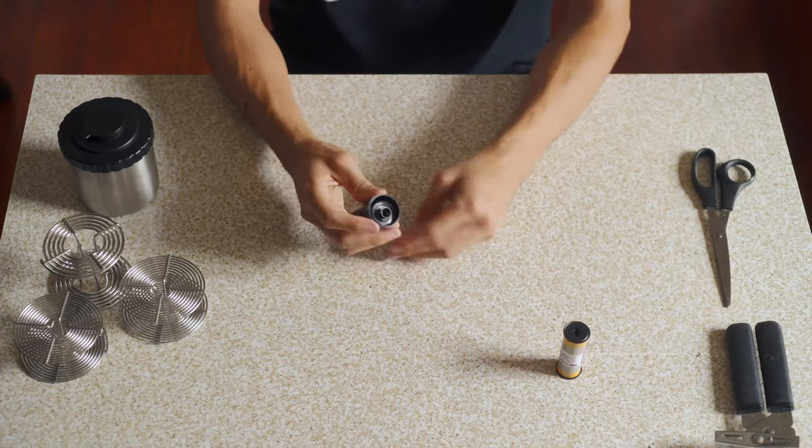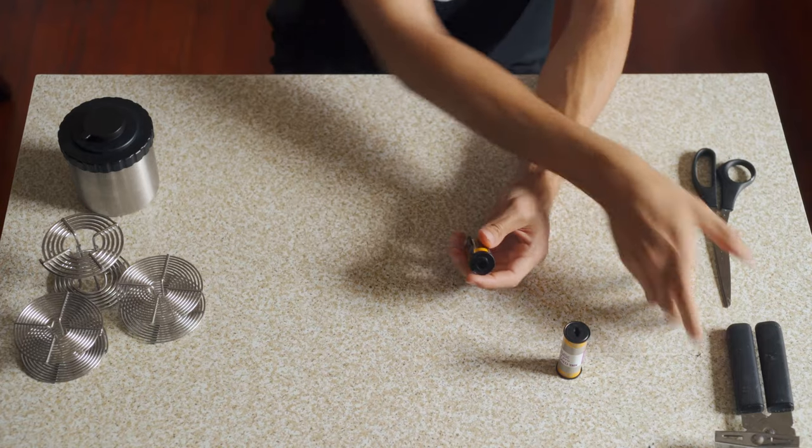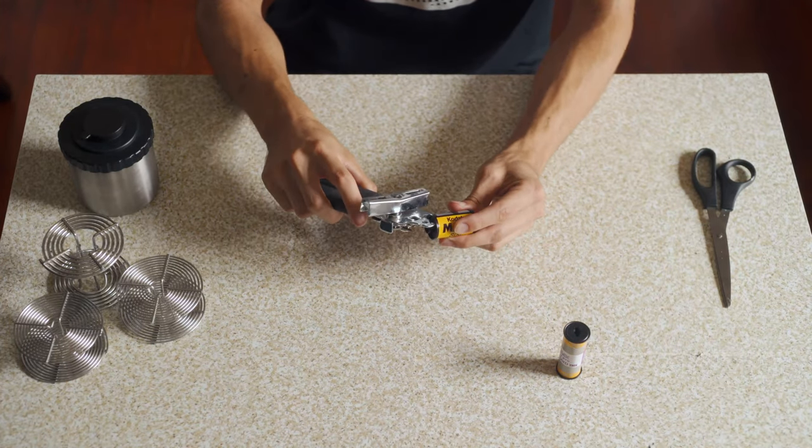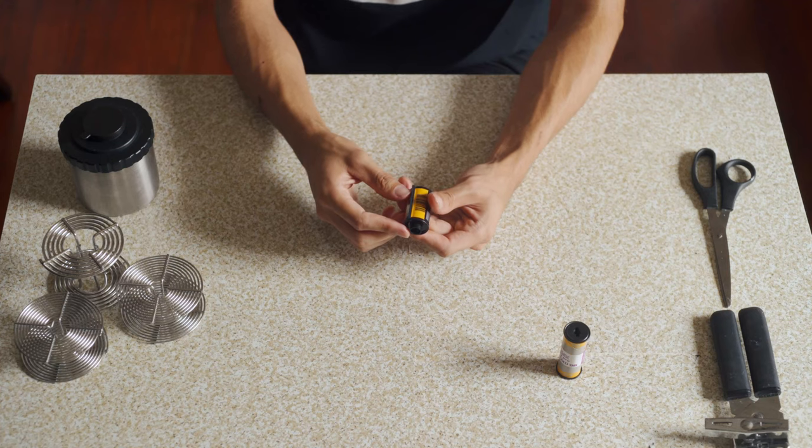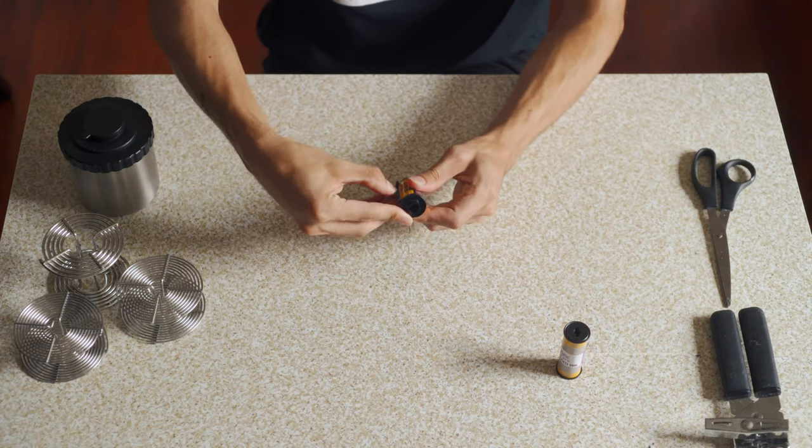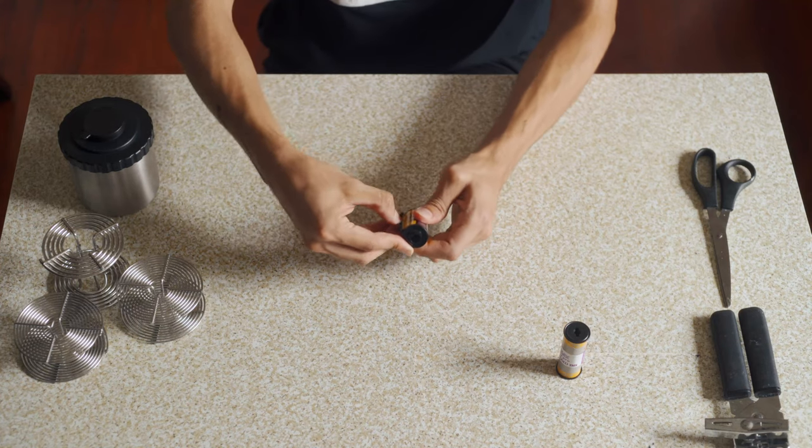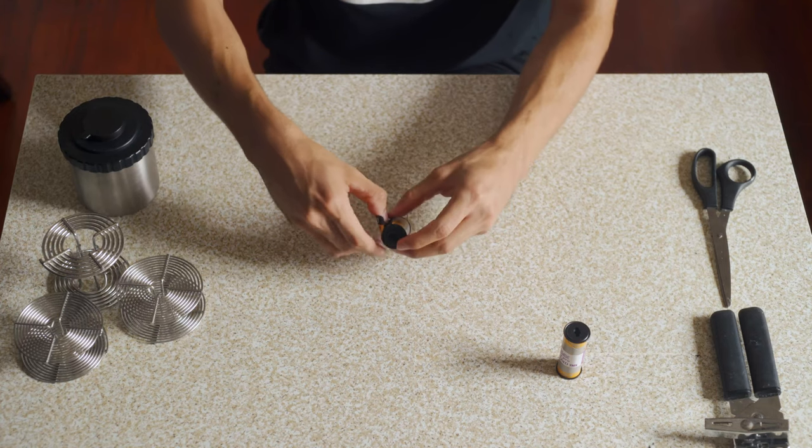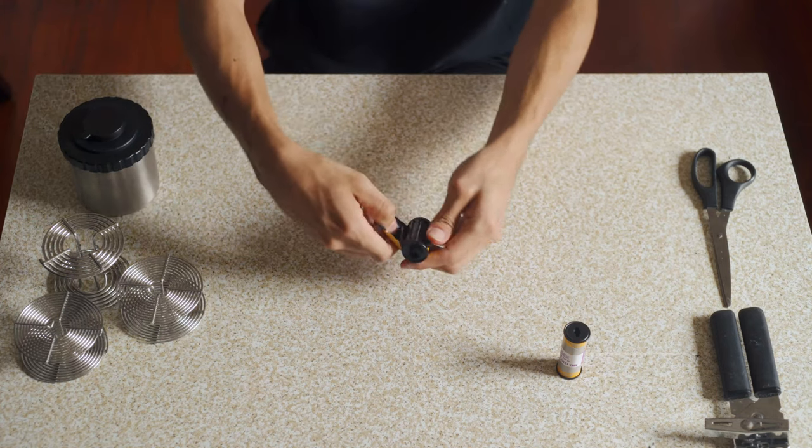So for 35mm film, you're going to take your canister, and you can optionally use a can opener to take the top off of the can. This is good for if you want to reuse this canister for bulk loading. But what I usually do is I find the split where the light trap is, use my finger to wedge it open, and I keep pulling it more and more until I just open the side.